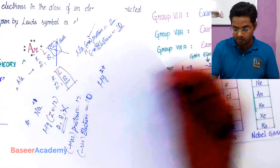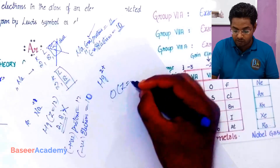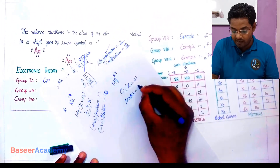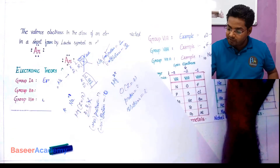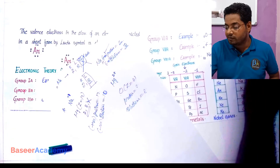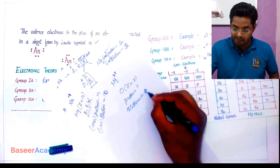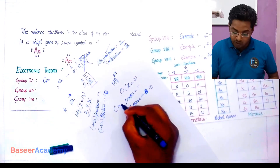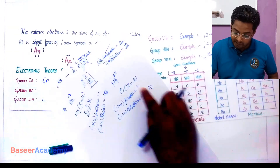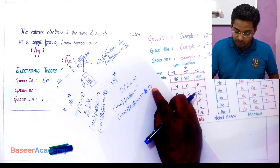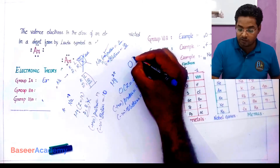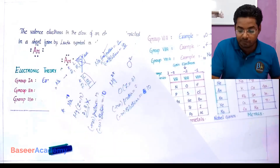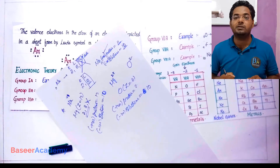Let's look at oxygen. Oxygen has an atomic number of 8, meaning it has 8 protons and 8 electrons. After oxygen gains two electrons, it has 10 electrons. The negative charge is now greater — 10 minus 8 is 2 — so the negative charge is greater by 2. Therefore, when an atom gains electrons, it becomes a negative ion.